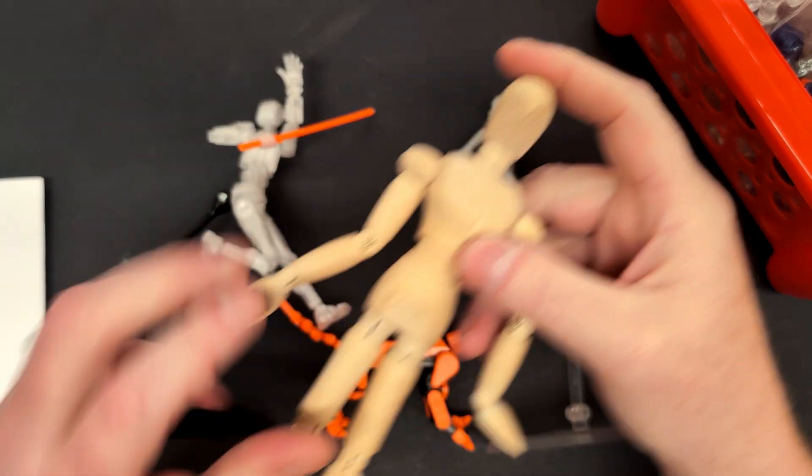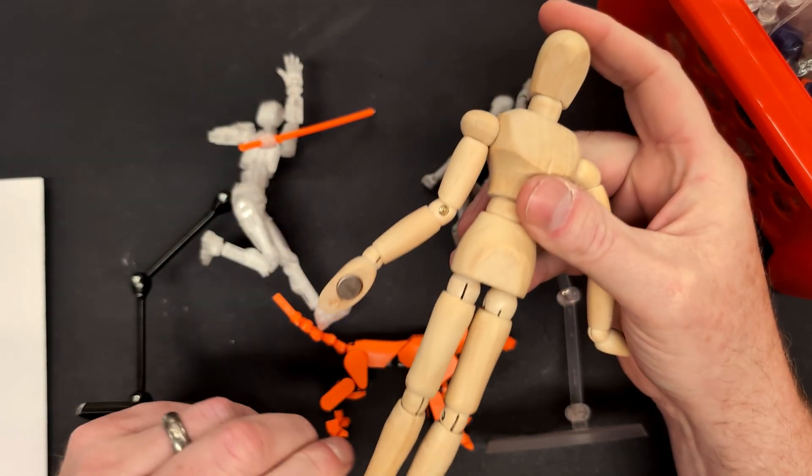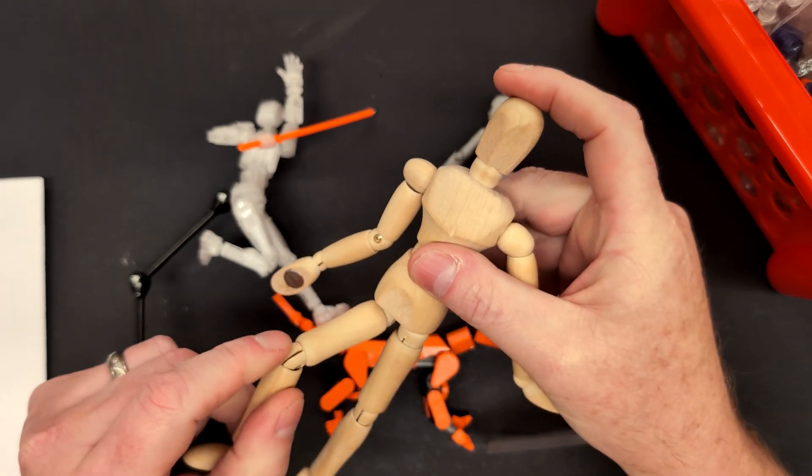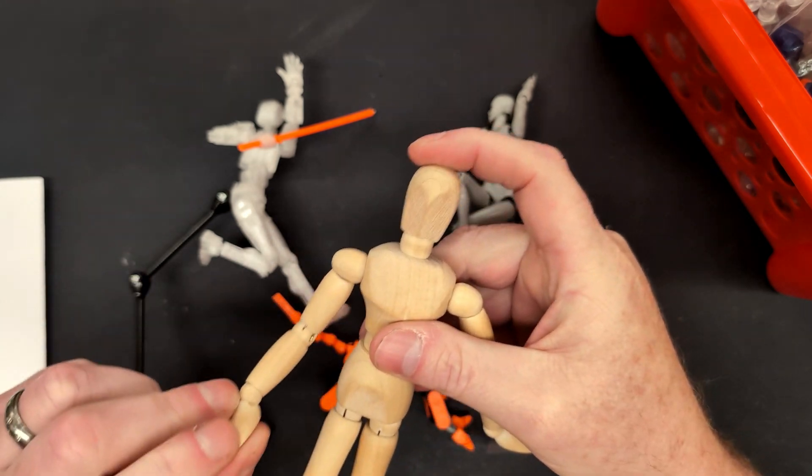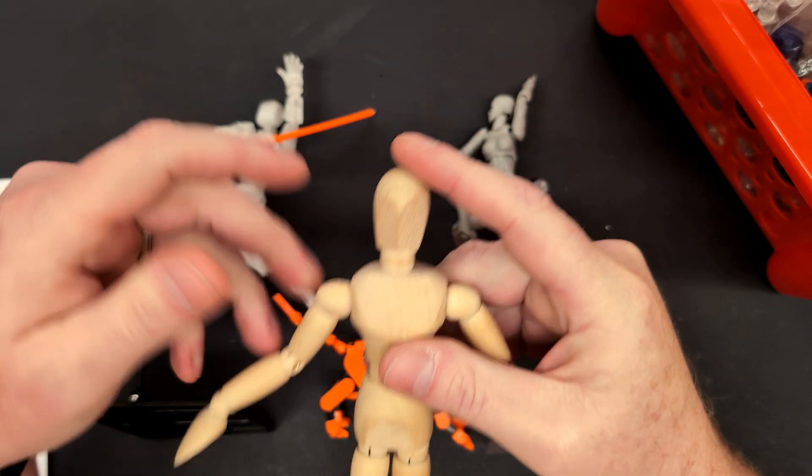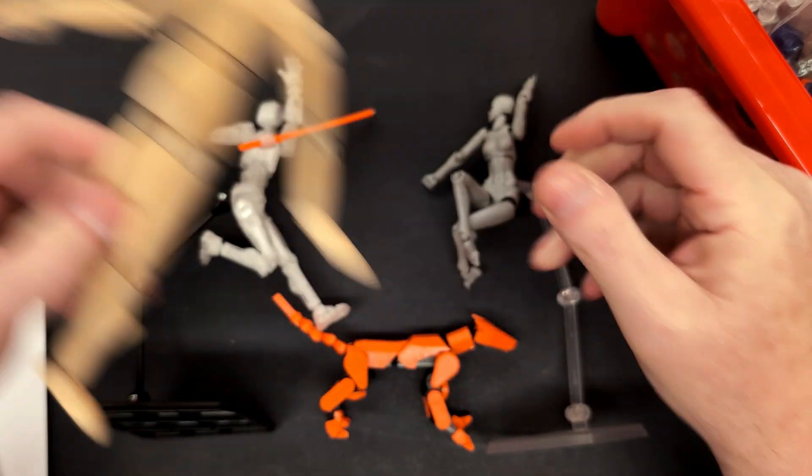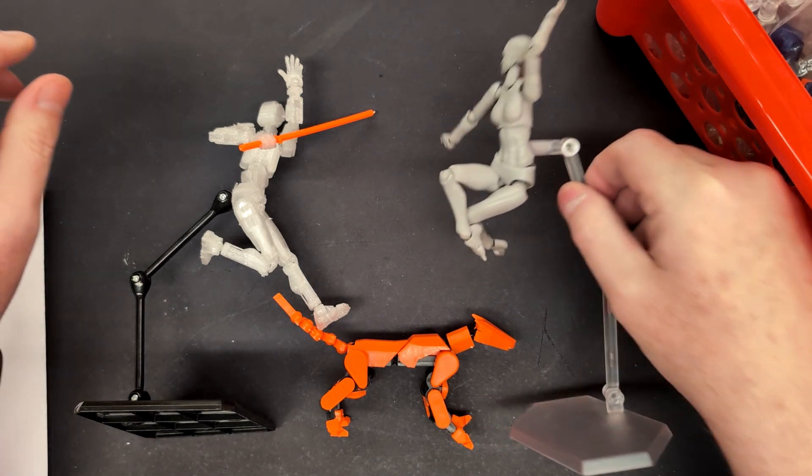So we're used to these wooden mannequins, and one of the limitations of wooden mannequins is the articulation. You have to follow some rules or you'll over-crank and break them. And then came out these figma figures.